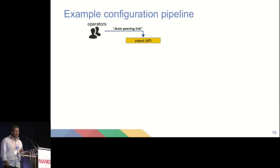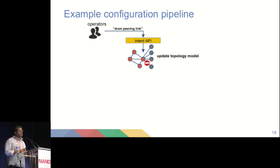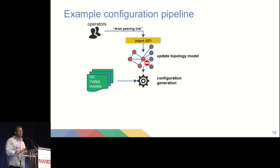To make this more concrete: where do vendor-neutral models fit into the configuration pipeline? We start with a relatively high-level abstract intent API — an operator might want to drain a peering link, for example. That usually translates into some topology change, like a link that needs to be taken down. The result of that topology change then results in a set of configuration changes. Here is where current tools have this big branch: if it's a Juniper device, I've got to issue this set of commands; if it's an Arista device, I've got to issue that set of commands, or get that vendor-specific template or this particular API call. That's the stuff we want to do away with — the onus has been on the operators thus far, and we're trying to push that further down to the devices.